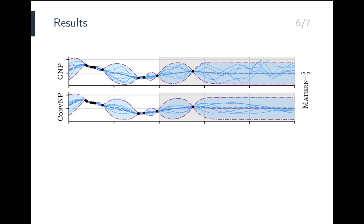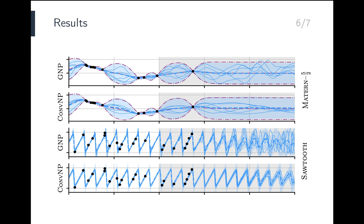The GNP can also successfully be trained on non-Gaussian processes — for example, a sawtooth process with a random shift and random frequency. In this case, samples of the GNP, although they do nicely interpolate the data, look much worse than samples of the CONVNP, especially far away from the observed data. This demonstrates that on certain non-Gaussian tasks, non-Gaussian neural process models like the CONVNP can offer better performance.